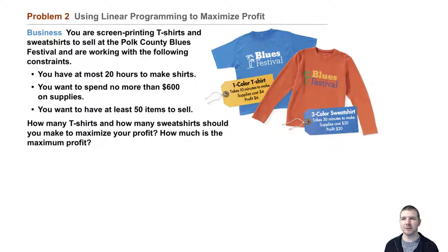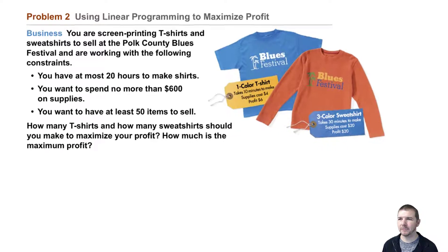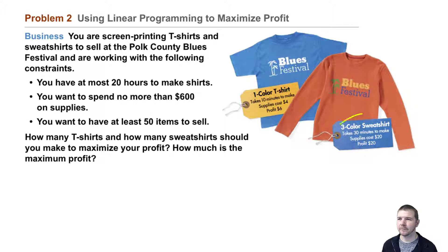You have at most 20 hours to make shirts. You want to spend no more than $600 on supplies. You want to have at least 50 items to sell. How many t-shirts and how many sweatshirts should you make to maximize your profit? A one-color t-shirt takes 10 minutes to make, supplies cost $4, and the profit is $6. A three-color sweatshirt takes 30 minutes to make, supplies cost $20, and you earn a profit of $20.